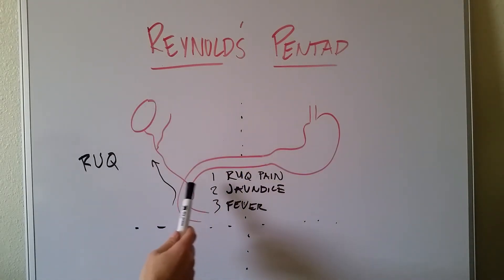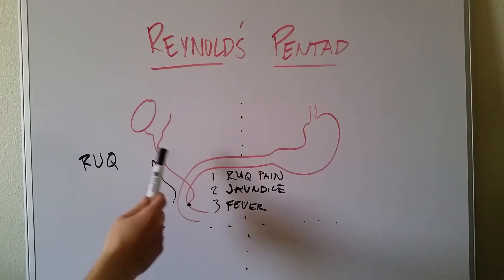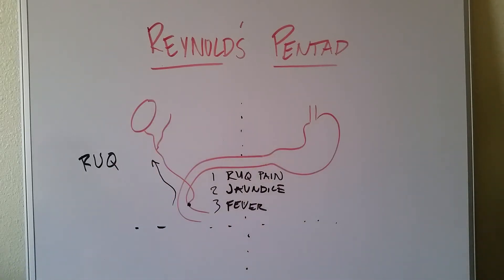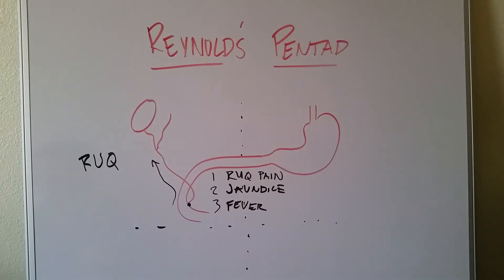The second is jaundice, because we can't excrete that bilirubin down the common bile duct through the bile. And the third is fever, because of the infection process — with the type of bacteria that we're dealing with, you're going to cause some interleukin release and cause a fever.